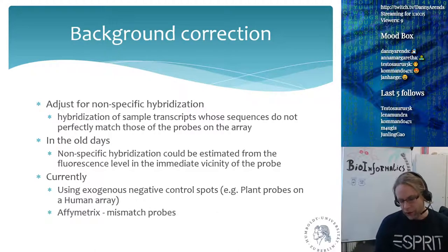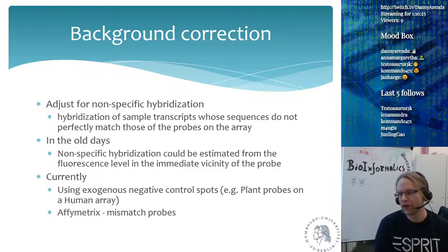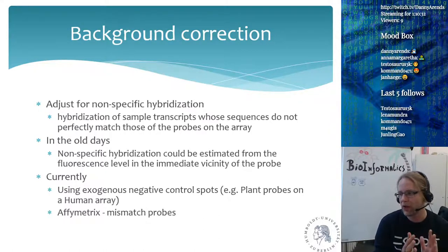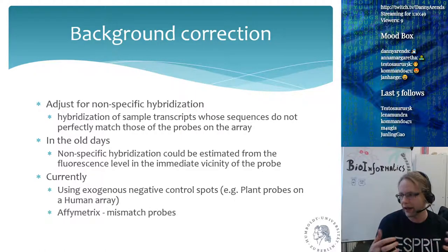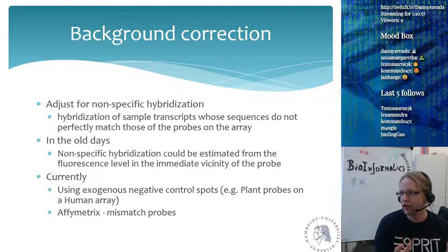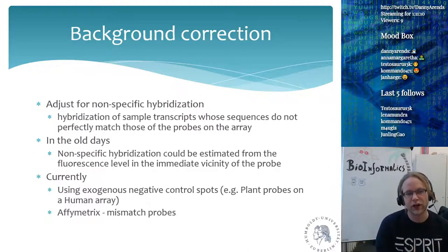One of the most important steps in microarray analysis is background correction, adjusting for non-specific hybridization. DNA will bind to DNA even with one or two mismatches, and despite washing steps, some non-specific binding always remains. This causes the whole array to have a slight baseline intensity — spots without bound DNA still appear slightly lighter than the surrounding area.